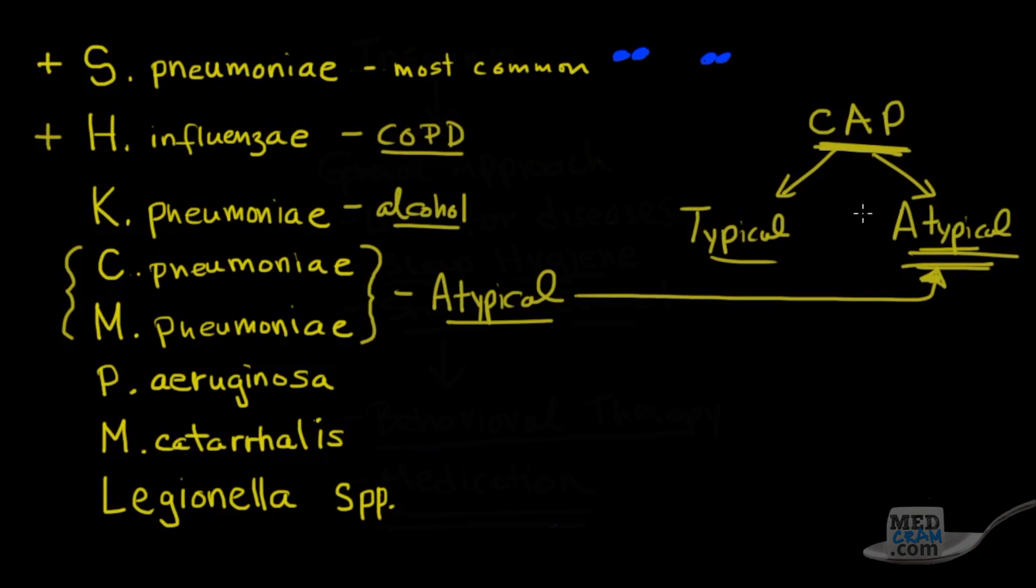Atypical means that they're going to have this type of walking pneumonia. It doesn't present typically. Typical pneumonia is fever, white count, infiltrate, feeling short of breath, things of that nature.